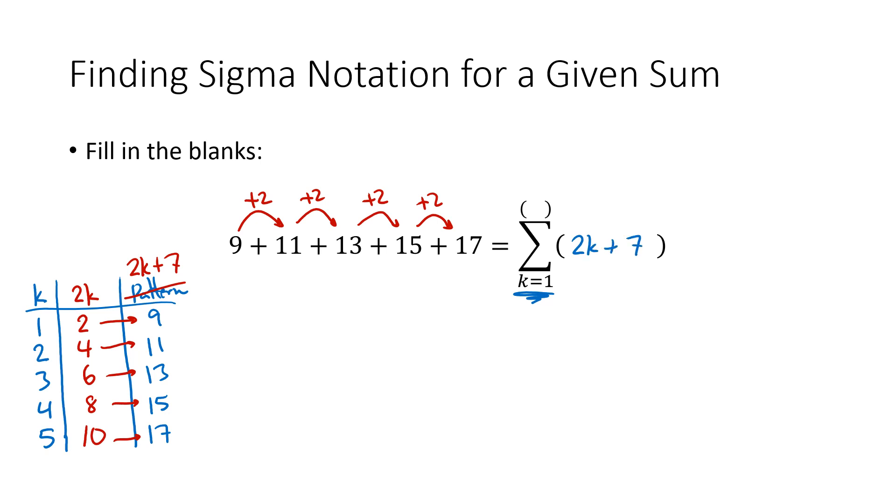Now what goes to the top? Well there's a couple of different ways to see this. Probably the easiest way is to notice that I have five numbers here. And so if my k is starting at 1, then ending k at 5 is going to give me 5 things to add together. The other thing you might notice is that if I want to set my pattern 2k plus 7 equal to 17 and solve, I also end up with k equaling 5. So a couple different ways to find that final value of k there.